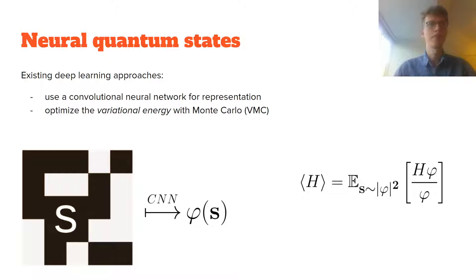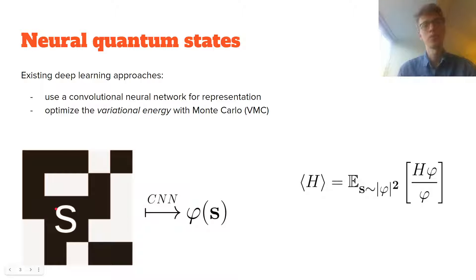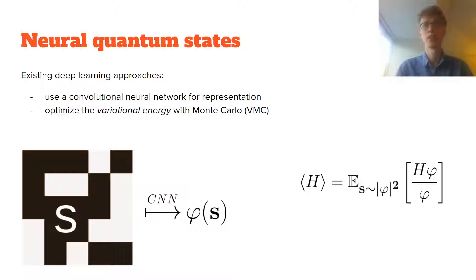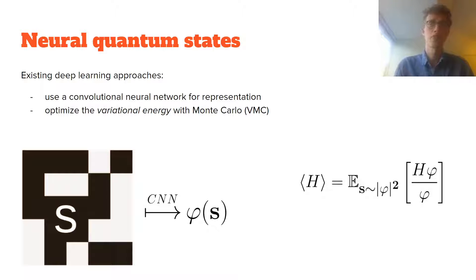To solve this problem, over the past five years it has become popular to use deep learning — representing this wave function using a neural network. For each spin configuration, you put it into a convolutional neural network and it outputs a complex number. These wave functions are then optimized using variational Monte Carlo, which evaluates the energy of the wave function and tries to minimize it, since the ground state is the minimum energy state.